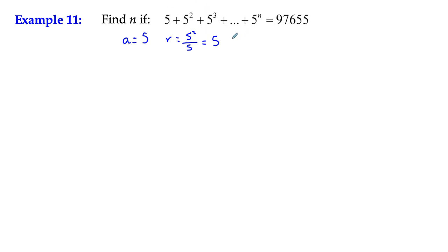And what have we got? We don't know what n is - we're trying to work that out. And we've got a total here of 97,000 odd. So we can say that the sum Sₙ = 97,655.